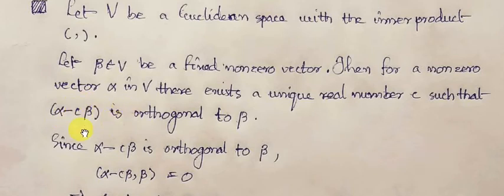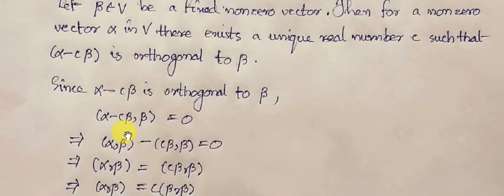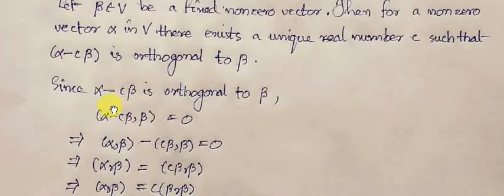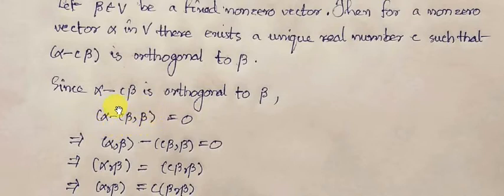Now let us find this scalar value C. Since the vector alpha minus C*beta is orthogonal to beta, we can write the inner product value of the ordered pair (alpha minus C*beta, beta) equal to zero.